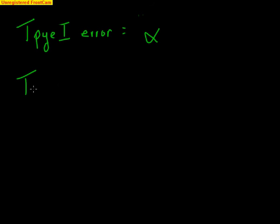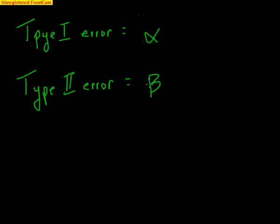A Type II error has a probability of occurring known as beta. The good thing is we never have to worry about calculating beta — it's actually very difficult to calculate and outside the realm of what we need to know. We just need to understand that beta is the value used to describe the probability of a Type II error.